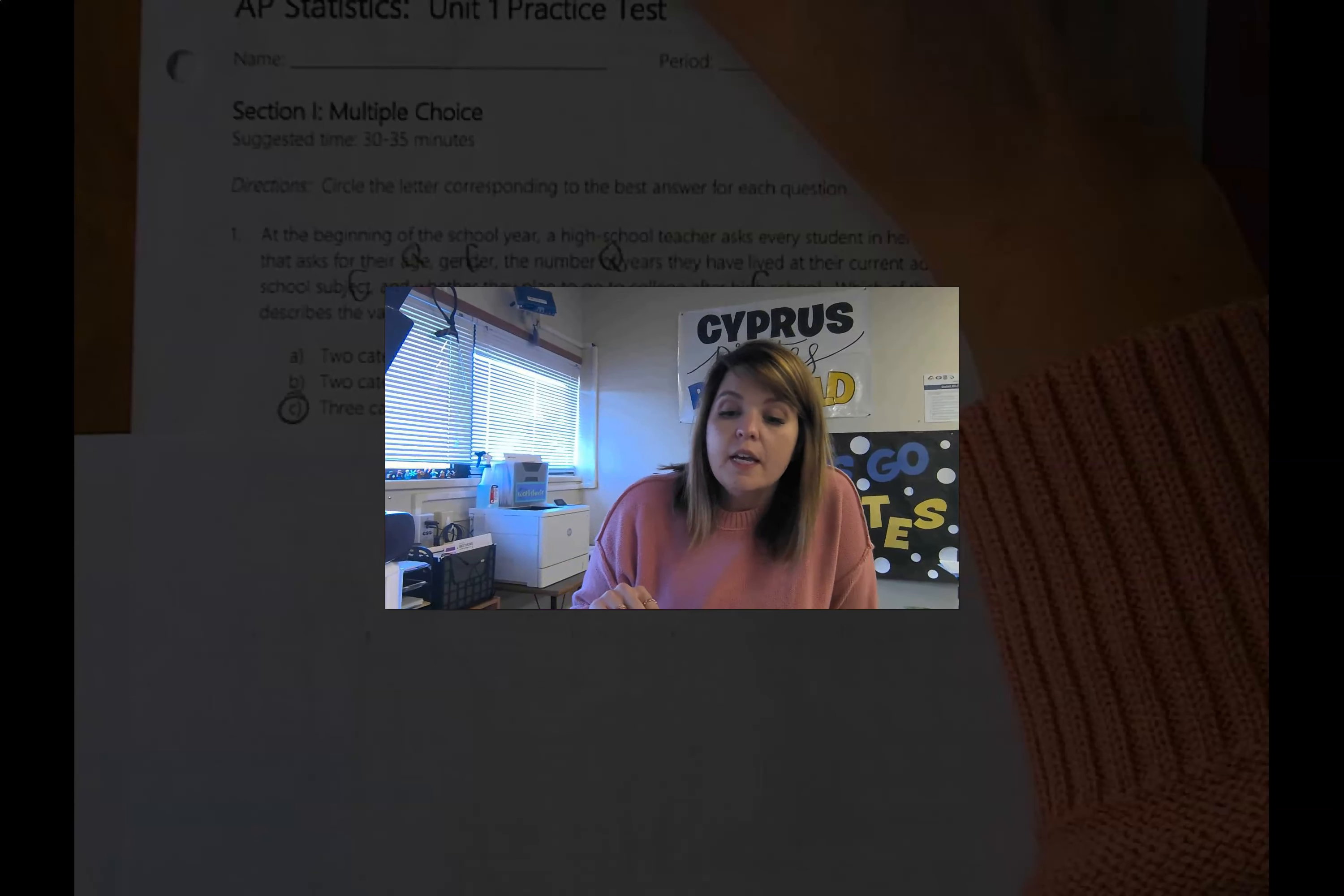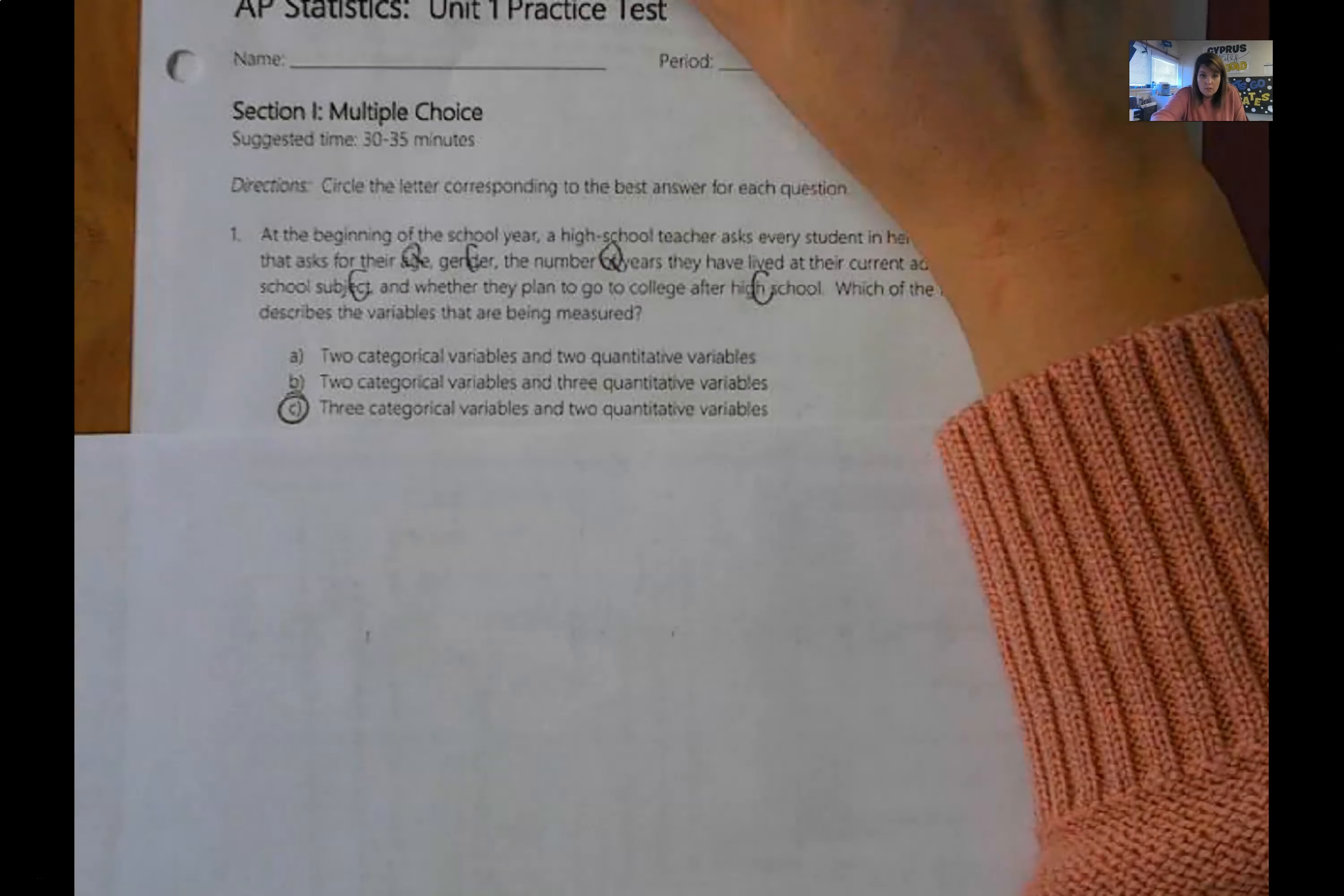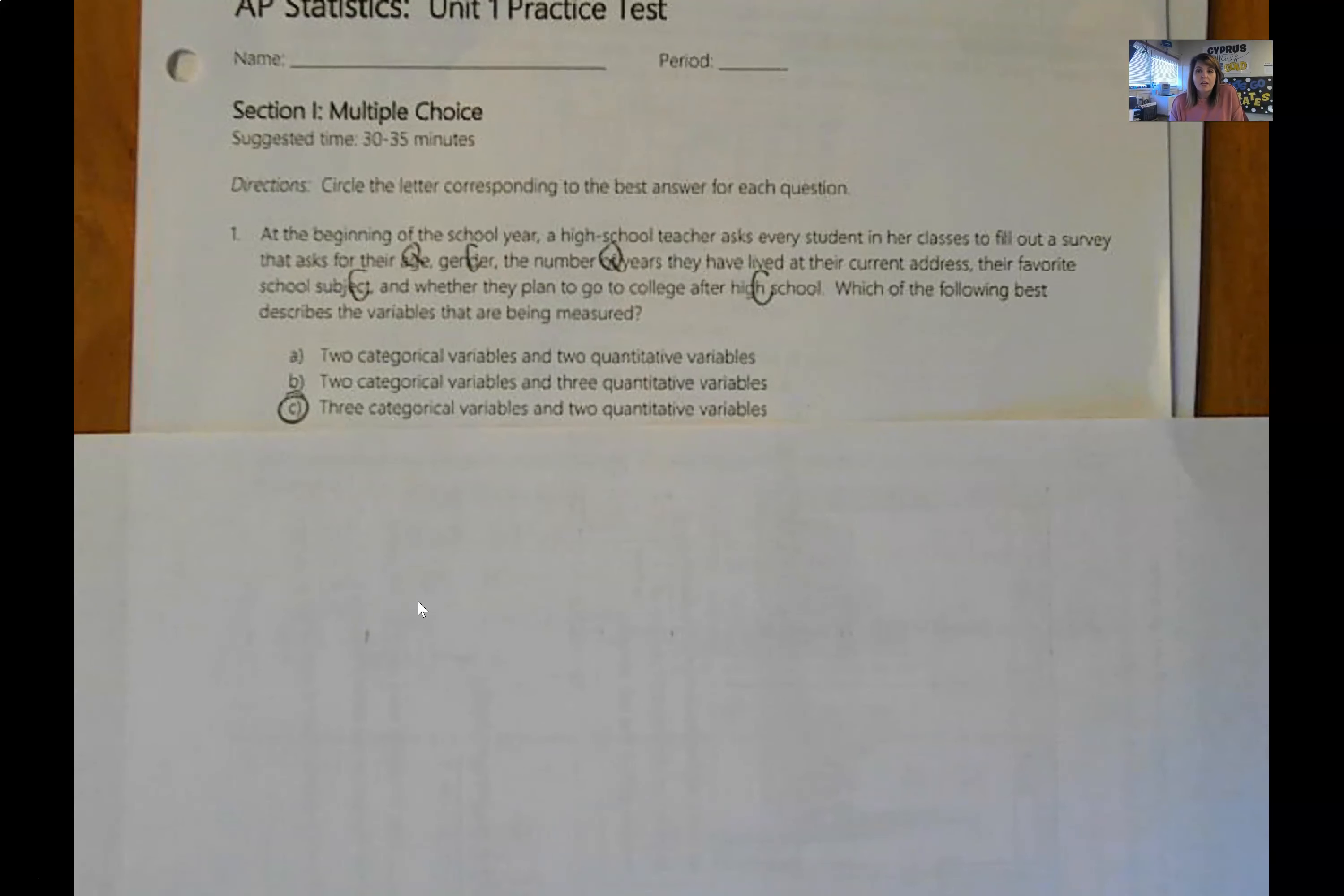Okay, so let's get started. Number one is asking you to identify whether variables are categorical or quantitative. So on number one, I just went through and read the problem and labeled in the prompt whether it was categorical or quantitative. And that led me to answer C as in Charlie.